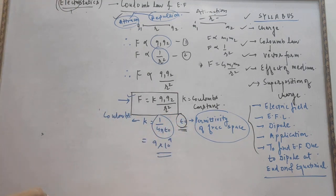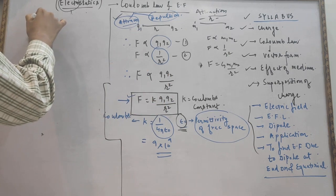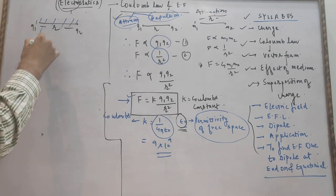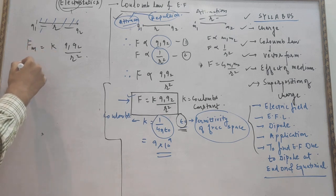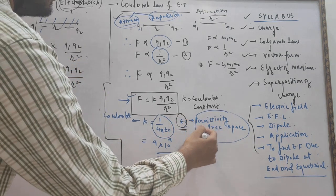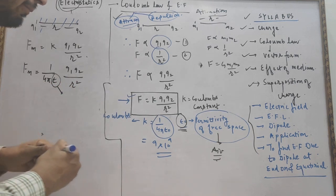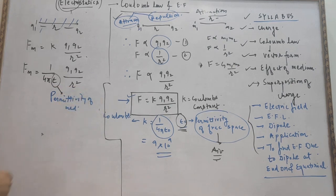Permittivity means how much a medium allows a force through it. Suppose this system is brought into another medium — the same charges are placed in a medium with permittivity ε (different from ε₀ of free space). The force in that medium is F_medium = k·q1·q2 / (ε·r²). Dividing the air equation by the medium equation gives us the ratio, which equals the relative permittivity, ε_r — also called the dielectric constant, which we will study in detail in the next chapter on capacitors.